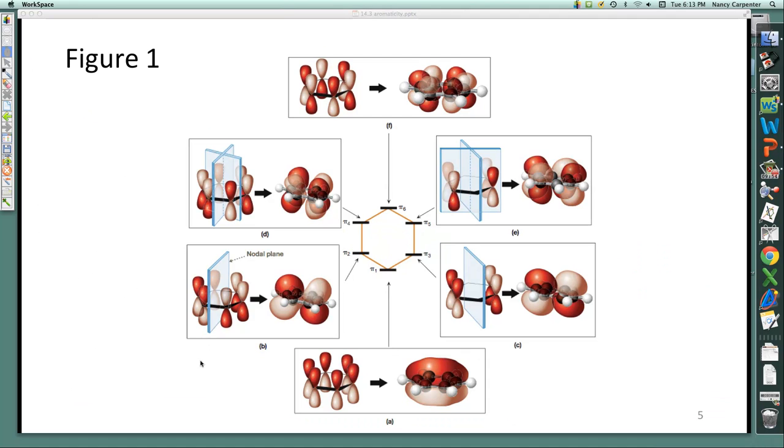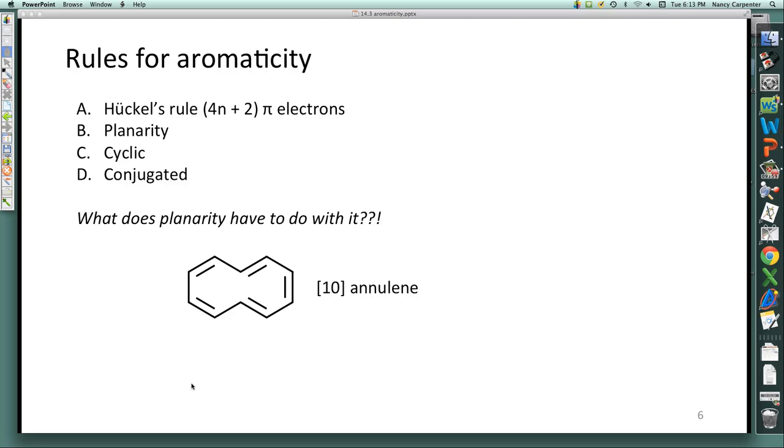So those are the rules for aromaticity. Benzene is a super simple example. It's pretty obvious. But what's with this whole planarity thing? Why does that even matter?